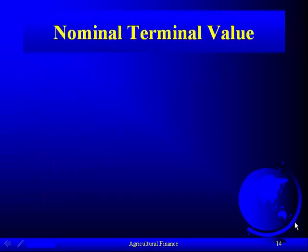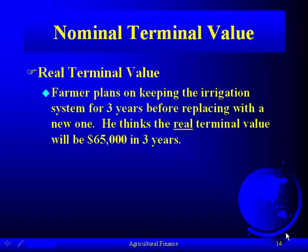The fourth component is the nominal terminal value. First, let's look at the real terminal value. If you look at the fine print in the problem, the farmer plans on keeping the irrigation system for three years before replacing it with a new one. He thinks that the real terminal value will be $65,000 in three years.